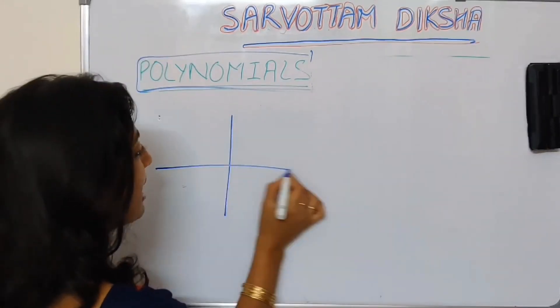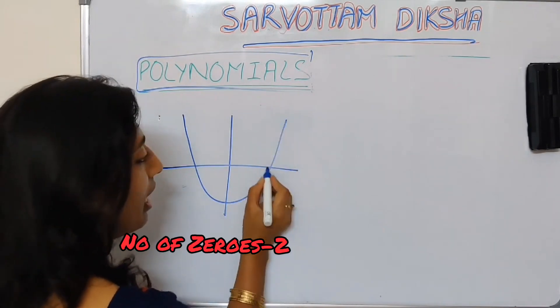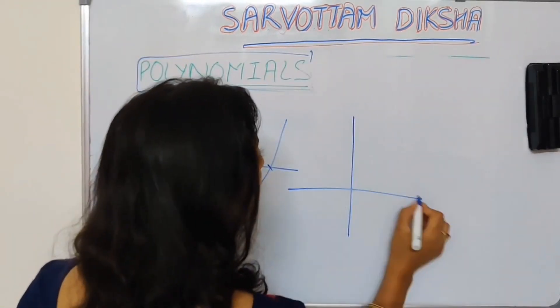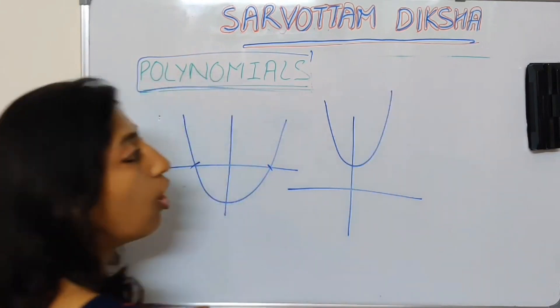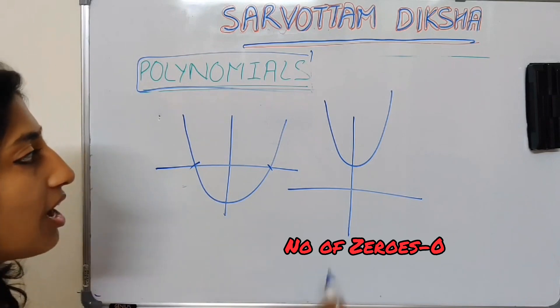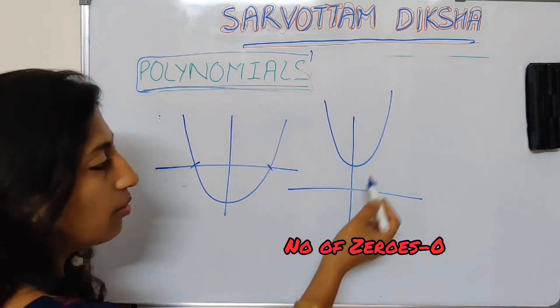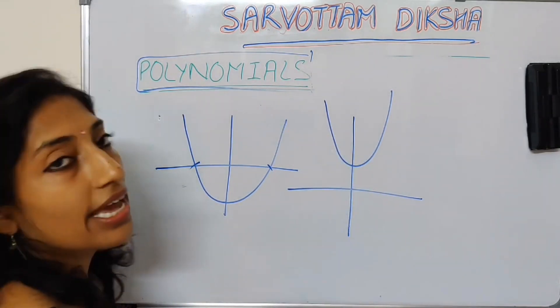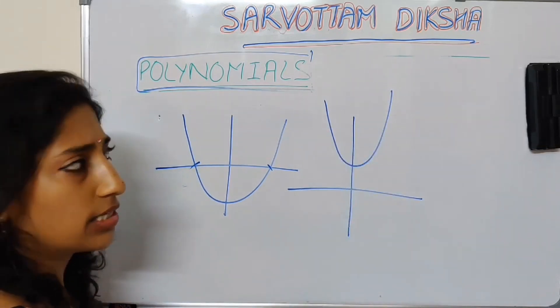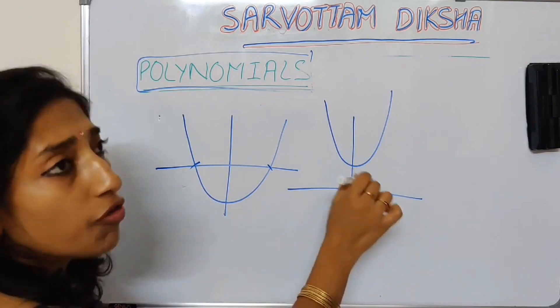We have seen maximum number of 0s possible are 2, but it is also possible that there is no 0 of a quadratic polynomial because in this case as we are seeing, my graph turned before intersecting x axis only. My parabola is not intersecting x axis, so we are not having any 0s for this expression.